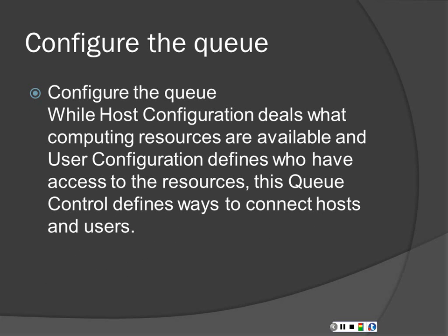Configuring the queue. Because you don't have any data yet to work on, when you configure the queue, the host configuration deals with what computing resources have been allocated to this program on each of the four computers you'll be working with. So if one computer has 256 megs of memory and 5 gigabits of hard drive space but another has 1 gig, the system will automatically know what resources it has and allocate computing tasks to it based on how fast it needs to run. This queue control is how devices connect to hosts and users and how it queues data to be processed in small manageable chunks.